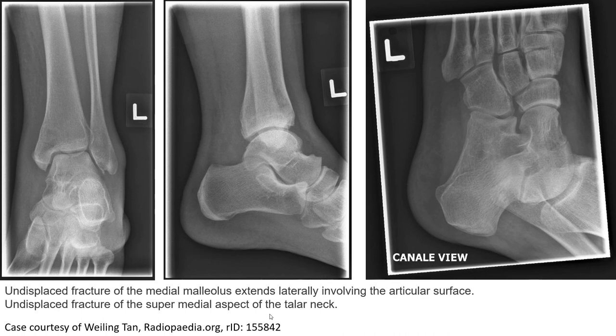Another example shows an undisplaced fracture of the medial malleolus extending laterally, involving the articular surface. There is also an undisplaced fracture of the superior medial aspect of the talus. The fracture line is appreciated on the coronal view and clearly seen on the frontal view, but is hard to identify on the lateral view.